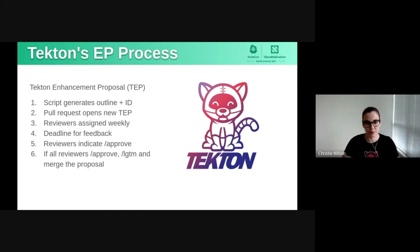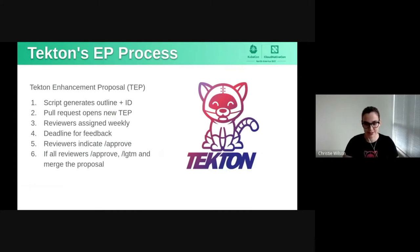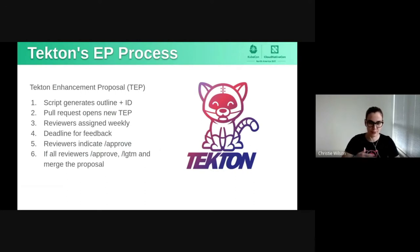The process for us is very similar. We also use GitHub as the source of truth. If you want to open an enhancement proposal, you open a pull request with the details. We have processes for assigning reviewers and we make sure we have reviewers from at least two different companies. There's a bunch of back and forth, and then ideally eventually it'll get to the point where everyone signs off, approves, and we merge it.